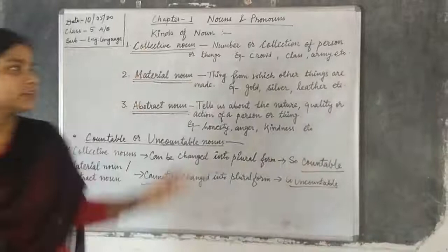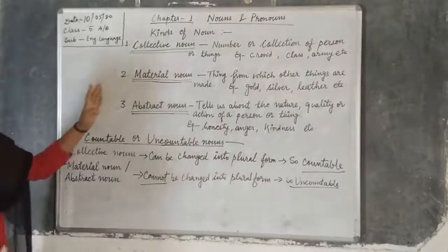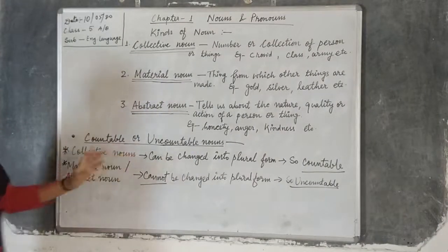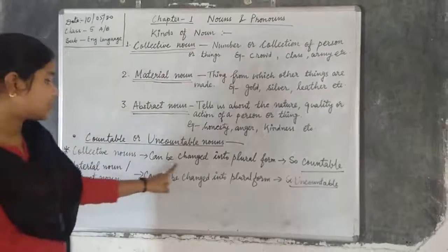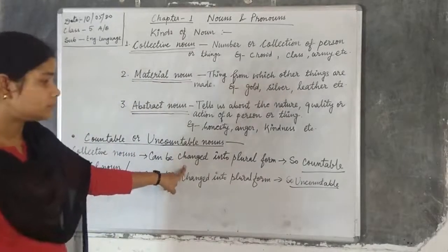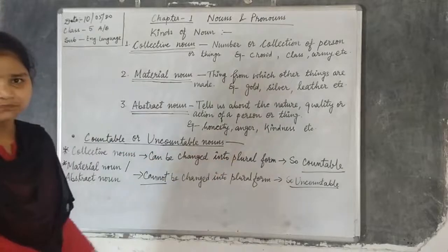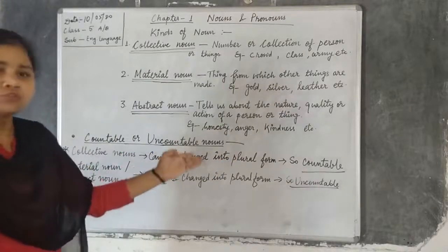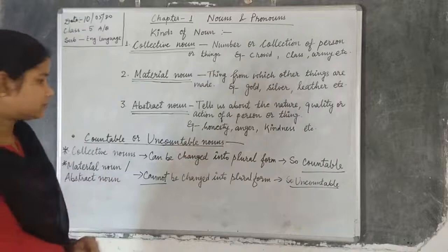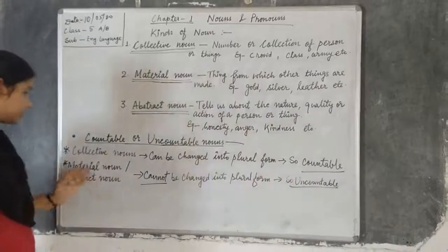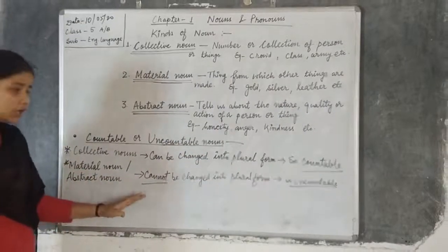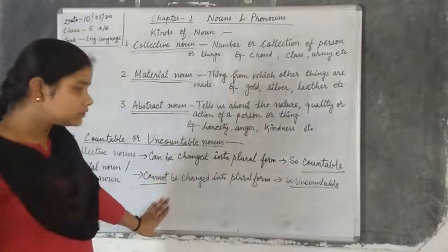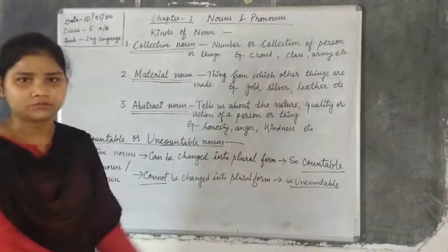After learning these three kinds of nouns, we have to classify them as countable or uncountable. Collective noun can be changed into plural form, so it is a countable noun. Material noun cannot be changed into plural form, so it is an uncountable noun.